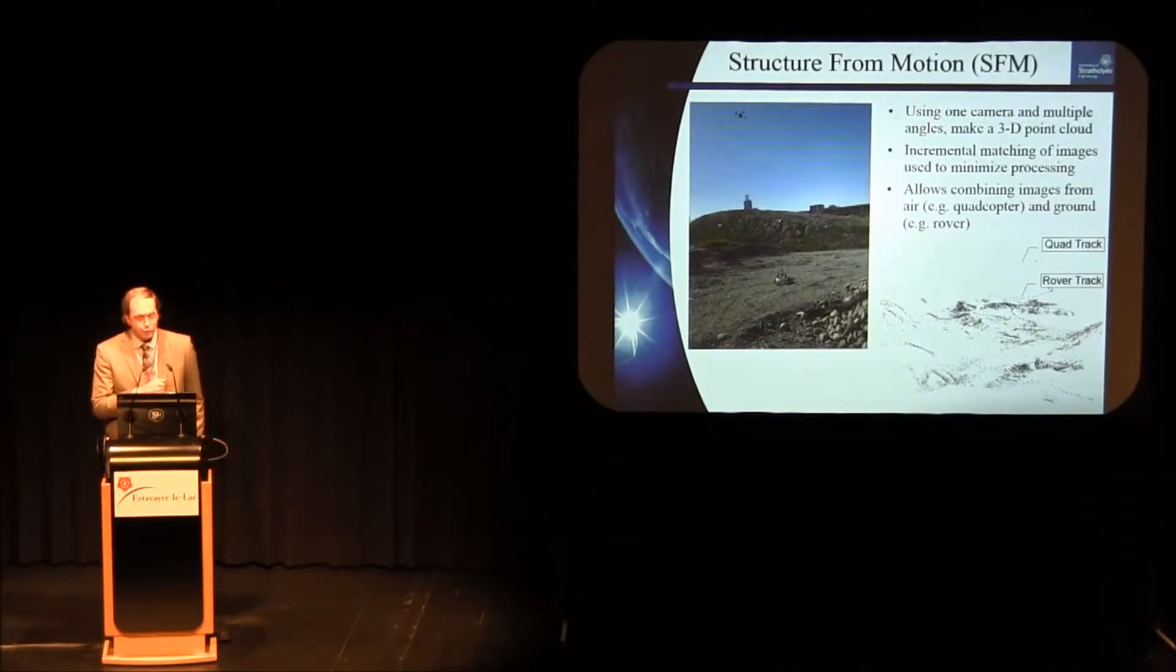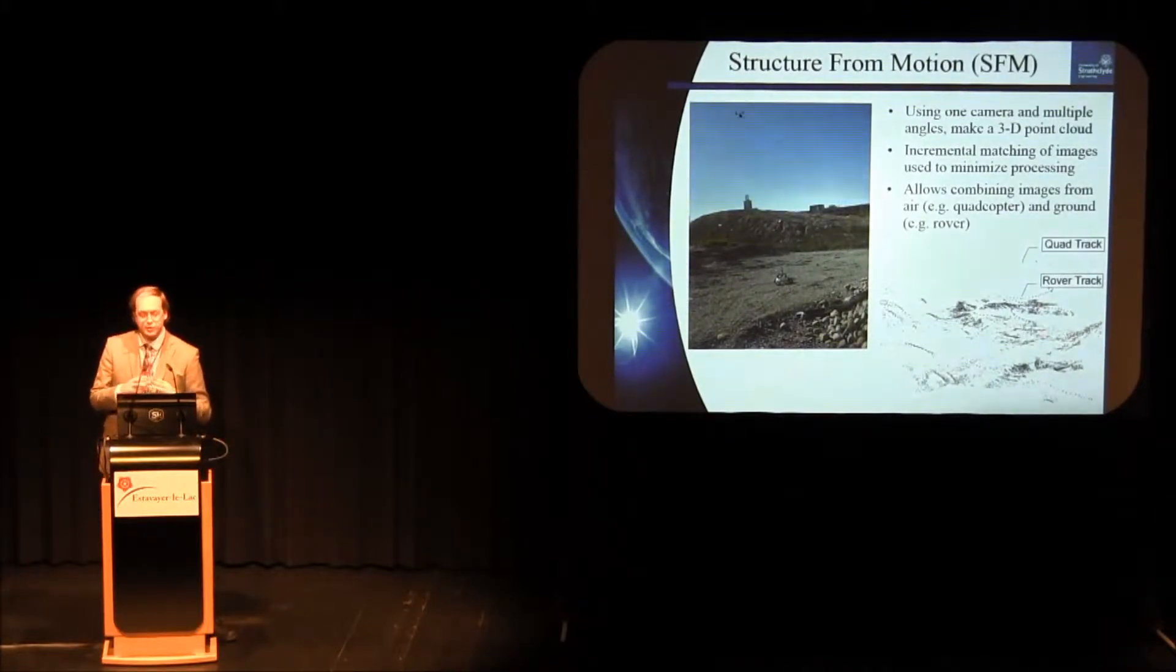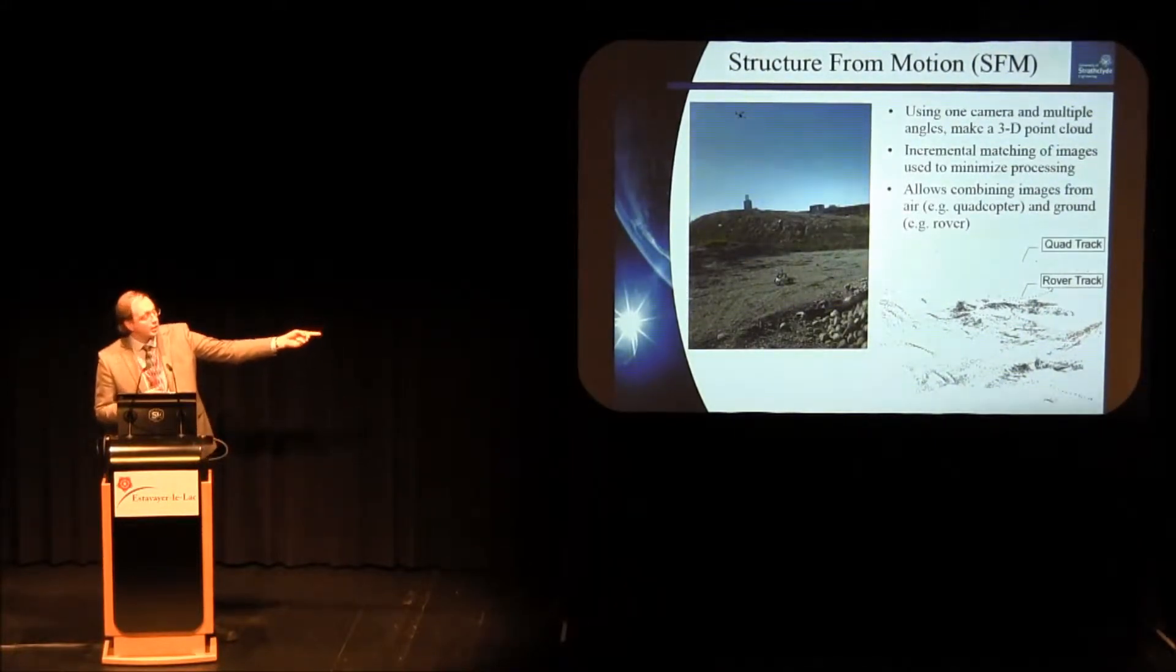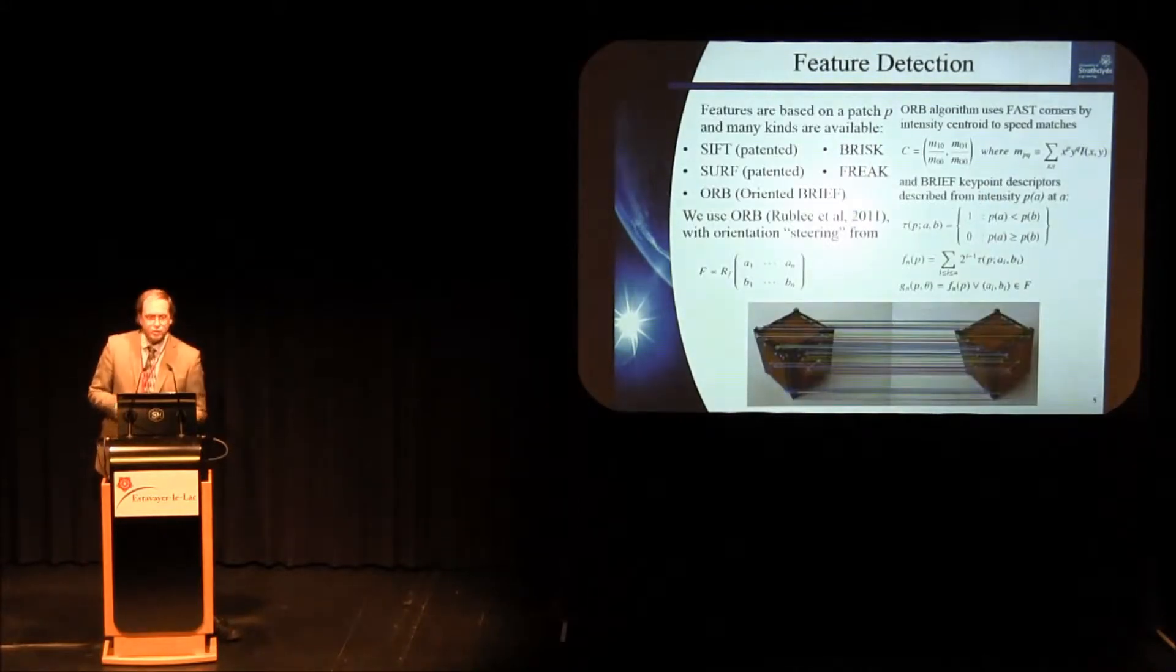So to be able to try to implement this, my approach is a structure from motion approach, which you may or may not have heard of. It's used in robotic mapping, photo tourism, applications like that. This is some prior work that I've done with a micro rover that I built at the bottom and a quadcopter. I've actually taken a series of images from both of these vehicles, created a 3D point cloud by identifying features in the images, and combined them so I could build this point cloud map that you see at the bottom that actually also includes information about where the quadcopter and where the rover are. That's called SLAM, simultaneous localization and mapping, and that's a significant part of most robotic systems.